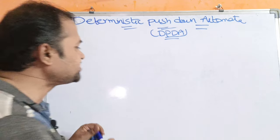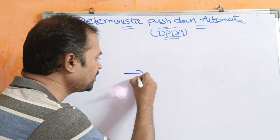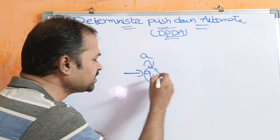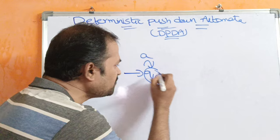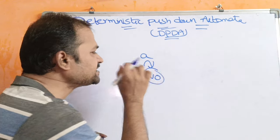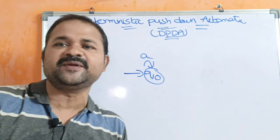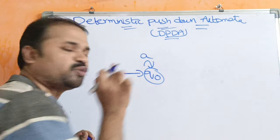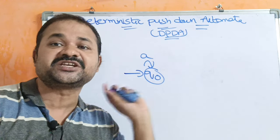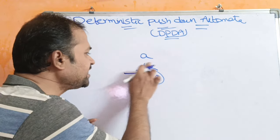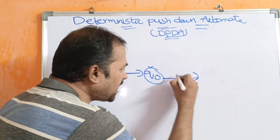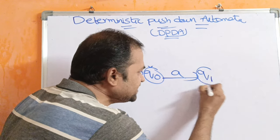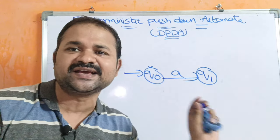For example, let we have a state Q0 and the input symbol is A. On applying A, if we traverse to only one state — for instance, staying at Q0 only — then it is called DPDA. Another example: on applying A on Q0, we are moving to only one state, Q1. So this is also called DPDA.